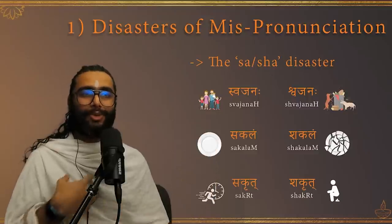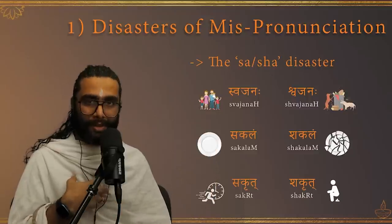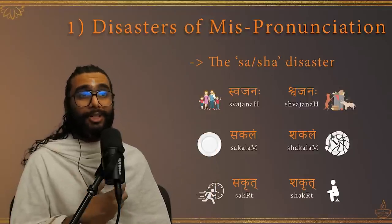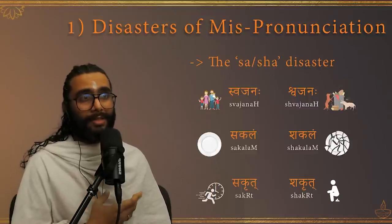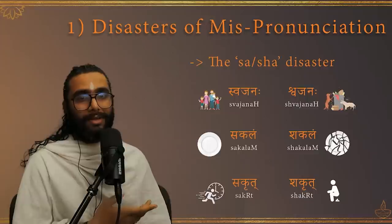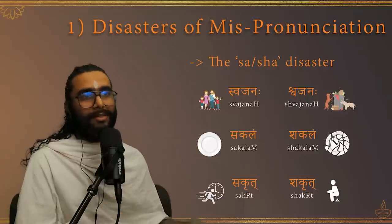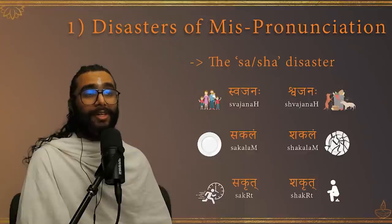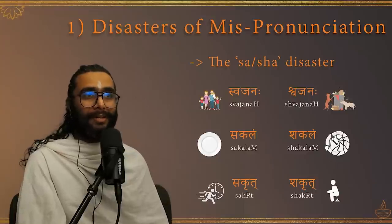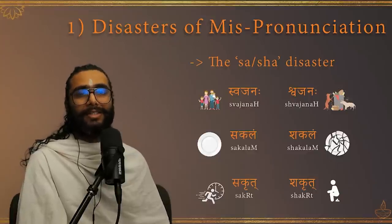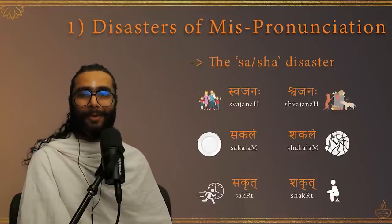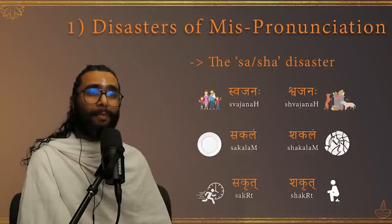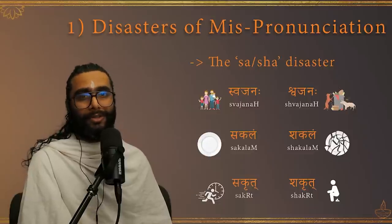'Svajana' is one's own people — 'sva' means self, 'jana' means people. But 'sva' means a dog, and 'jana' means people or a group. 'Ja' is birth and 'janaha' means people of the same birth. So 'svajana' is a pack of dogs.